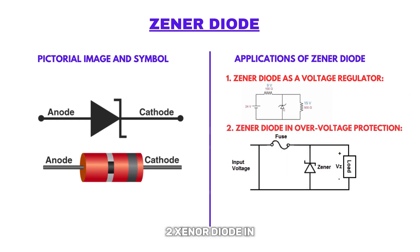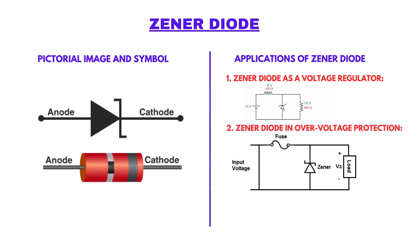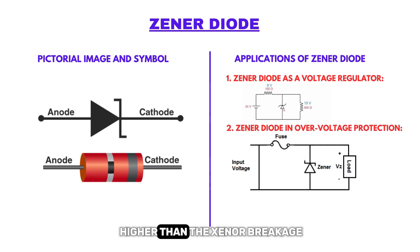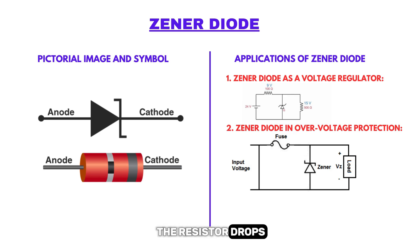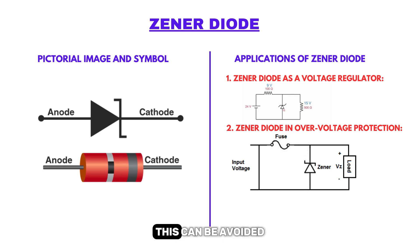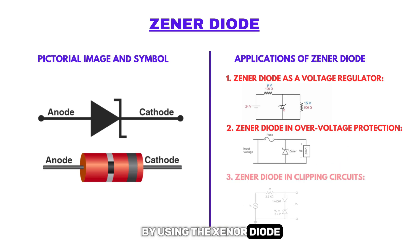Zener diode in overvoltage protection: when the input voltage is higher than the Zener breakdown voltage, the voltage across the resistor drops, resulting in a short circuit. This can be avoided by using the Zener diode.